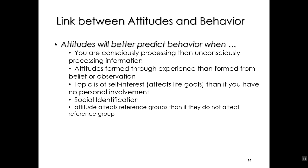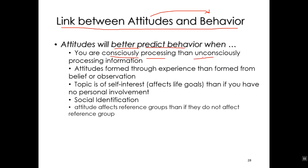Over the 1980s and 90s, a great deal of research was done on what determines whether or not there is a link between attitudes and behavior. Your attitudes will better predict behavior when you're consciously processing rather than unconsciously processing information — explicit attitudes predict explicit behavior better. Attitudes formed through direct experience will predict behavior better than attitudes formed through observation or belief. If the topic is of self-interest — if it affects your life goals — it will have a stronger attitude-behavior link than if there is no personal involvement.